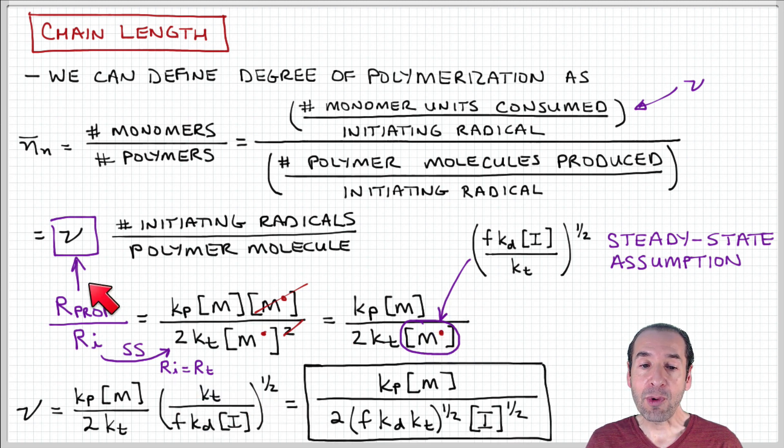I get the following expression for ν in terms of the polymerization, dissociation, and termination rate constants, and the monomer and initiator concentration. Now that I have an expression for this term ν, we can go back and obtain an expression for the degree of polymerization.